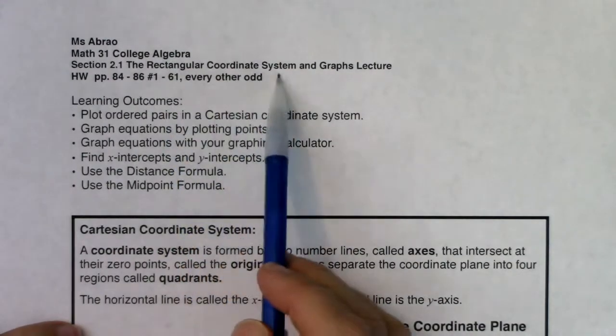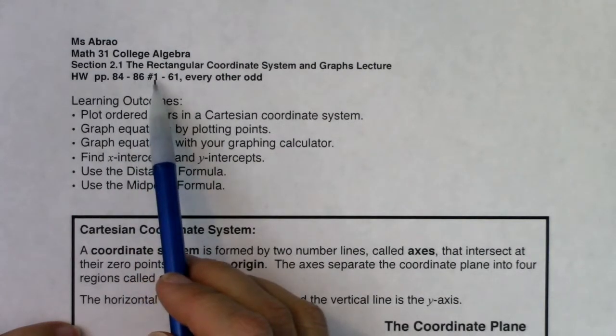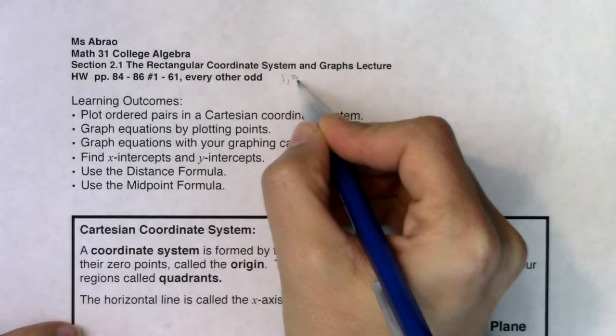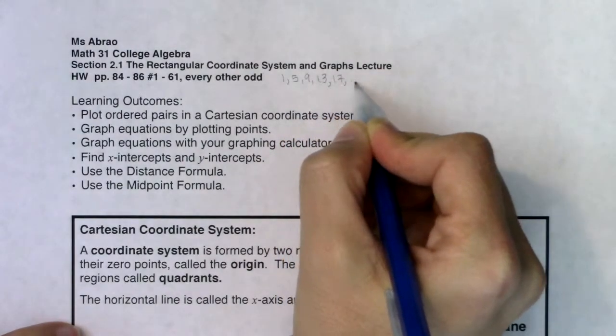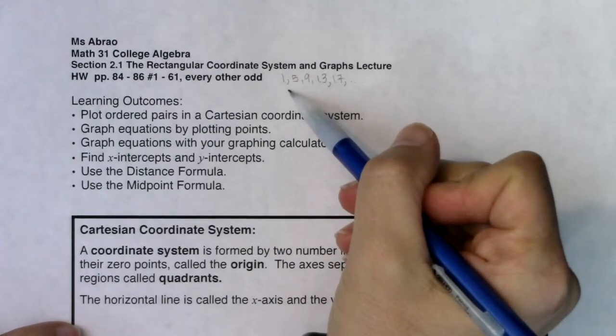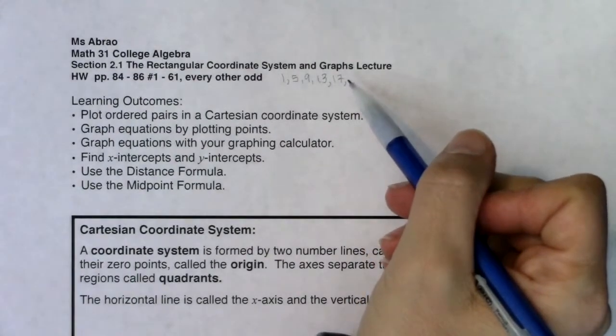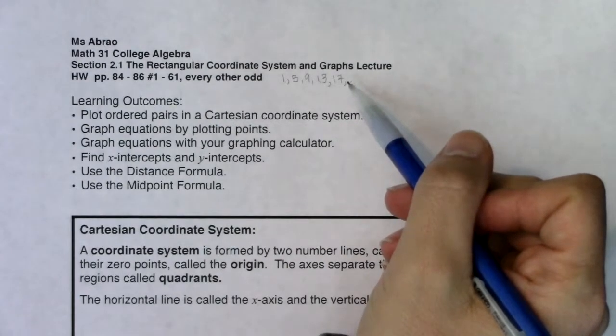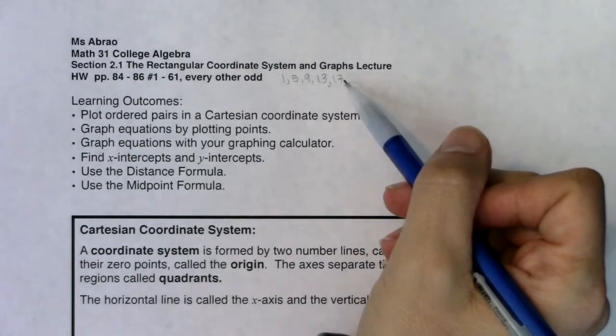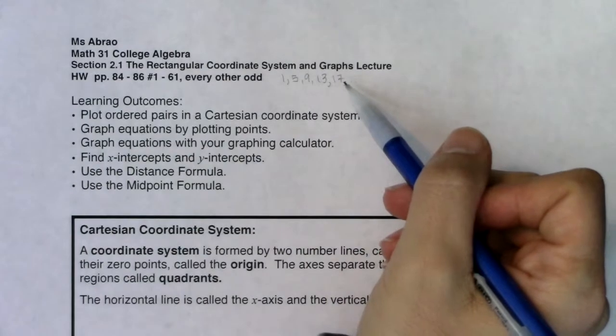We're going to learn about the rectangular coordinate system and some graphs. Your homework, if you go to your book, it's pages 84 to 86 and you're going to do 1 through 61 every other odd. And when it says every other odd, that means you would do 1, 5, 9, 13, 17, so on and so forth. Keep in mind you can find the solutions to these in Canvas for reference. And you can always email me with screenshots if you ever have any questions on homework. Or if you're in my hybrid class, we can meet face-to-face at some point and go over any homework questions you want. So make sure you've got a lot of resources available to you.